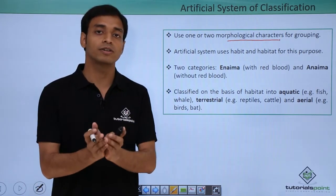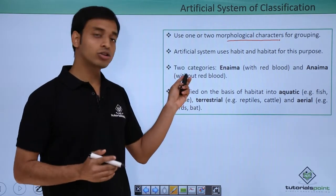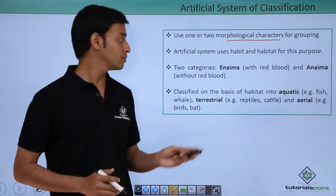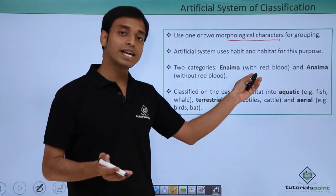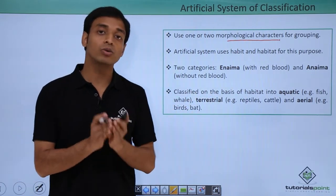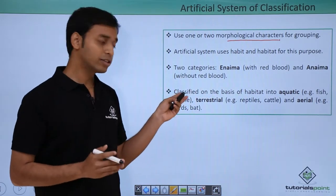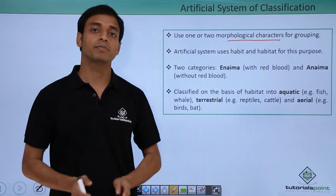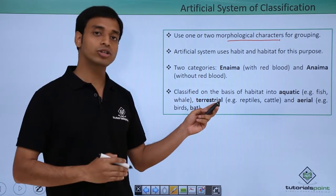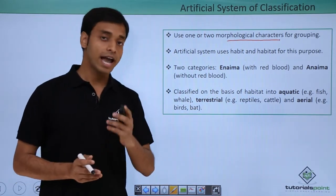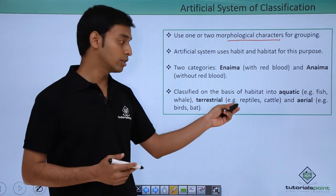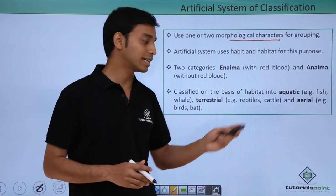Based on this artificial system, the famous scientist Aristotle divided organisms into two groups based on the presence or absence of red blood: 'Anima' — organisms which had red blood — and 'Anima' — organisms without red blood. Aristotle also classified organisms based on habitat into three groups: aquatic (e.g., fish, whales), terrestrial (e.g., reptiles, cattle), and aerial (e.g., birds and bats).